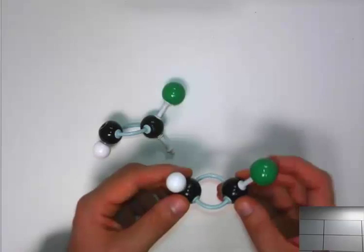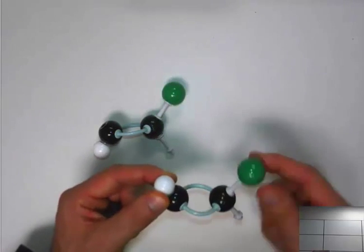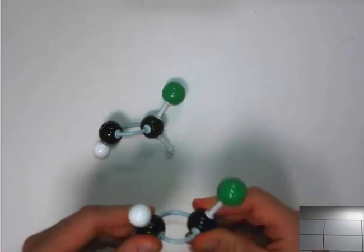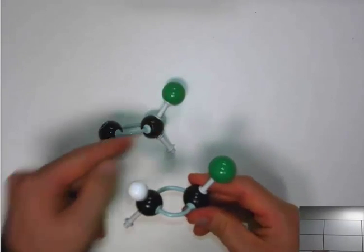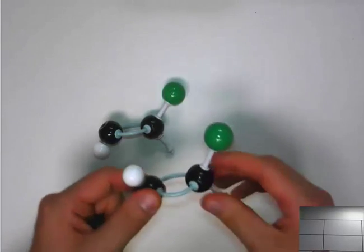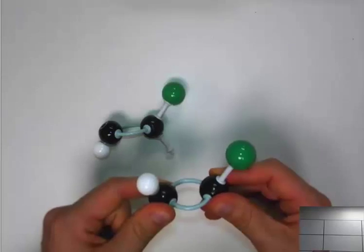In the other case, I have a cis configuration. These two side groups are next to each other. Now, there's no way to rotate this to go from one case to the other, because that's a double bond. And remember, double bonds don't allow for free rotation along those axes.